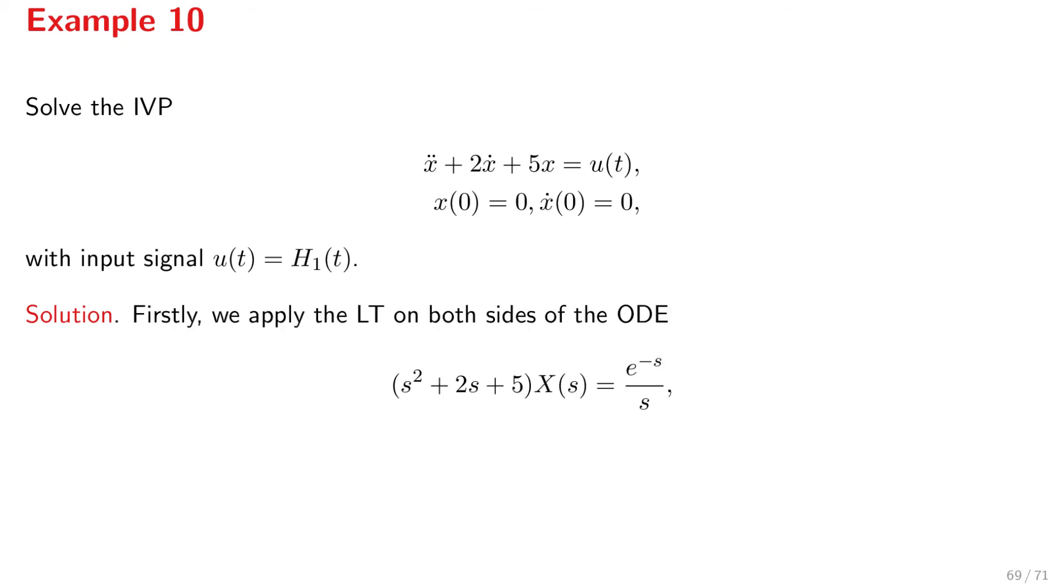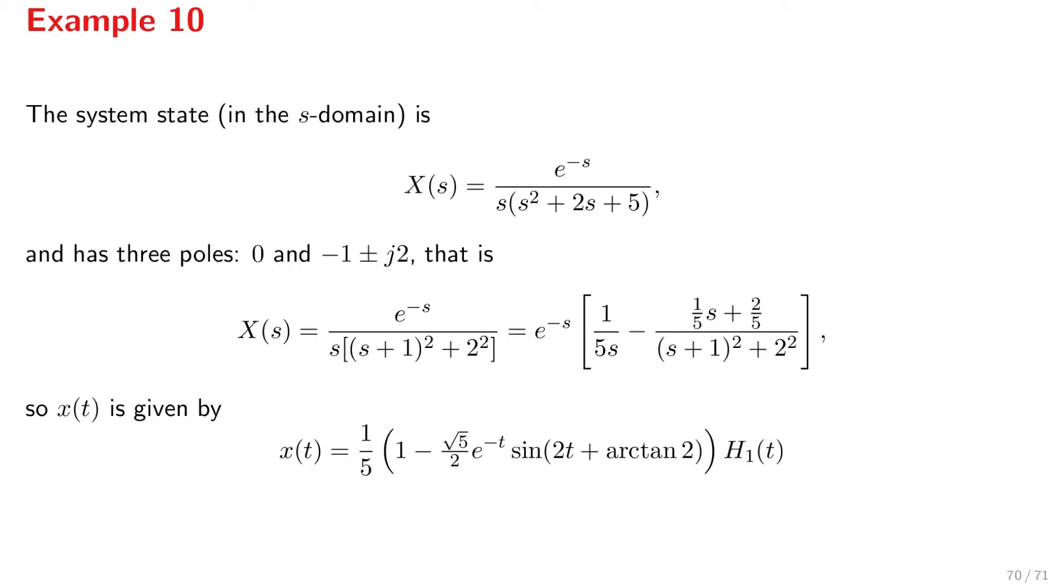The procedure is the same. Firstly, we apply the Laplace transform on both sides of the differential equation, and we have s squared x plus 2sx plus 5x is equal to the Laplace transform of the Heaviside with parameter 1, which is e to the minus s over s, and then we solve for x. This is very simple. We just divide by s squared plus 2s plus 5, and this is the expression x of s in the s domain. Now, we apply the inverse Laplace transform. You know how to do that, and we obtain the solution in the time domain, which is given by 1 fifth times this parenthesis times h1 of t, and this is defined for non-negative times t. So, you see, by applying the Laplace transform and then the inverse, we can solve initial value problems.